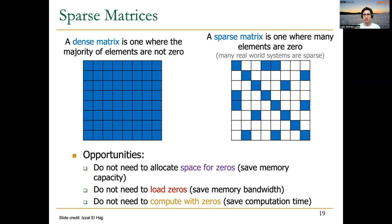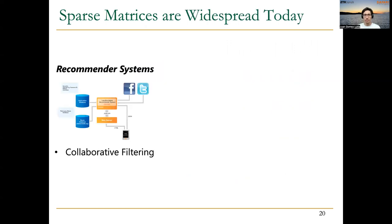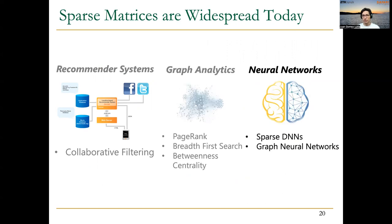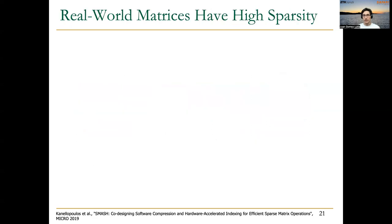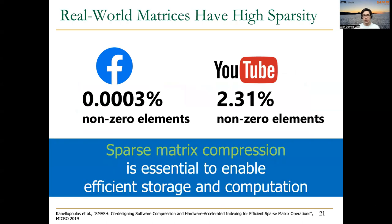Sparse matrices are widespread today. You can find them in recommender systems, in graph analytics with algorithms like PageRank or breadth-first search, and in neural networks — both in sparse DNNs and in graph neural networks. Real-world matrices have high sparsity. If we take a look at connectivity graphs from, for example, Facebook or YouTube, we will see that they are very sparse. So a good sparse matrix compression is essential to enable efficient storage and computation.